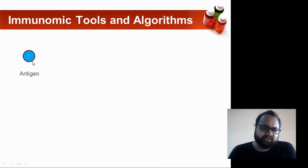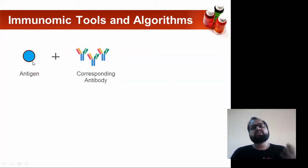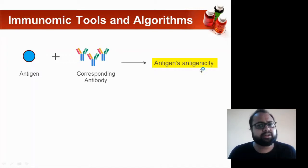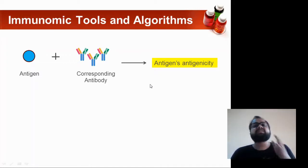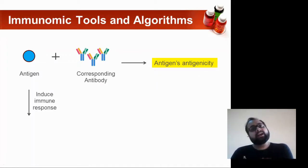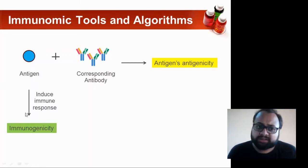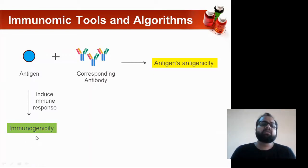Your antigen binds to the various corresponding antibodies, and this binding of your antigen to the corresponding antibodies is called antigenicity. When these antigens induce some sort of an immune response, then what we call is immunogenicity.